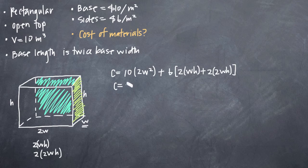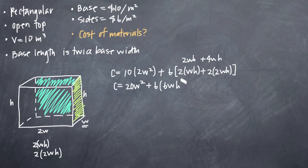We see that we get cost equals 20w squared plus, we can say 6 times, here we have 2wh and here we have 4wh so we know that we have 6wh when we simplify. And of course, if we distribute the 6, we'll get plus 36wh.